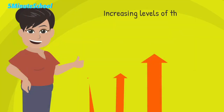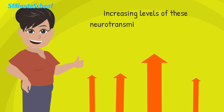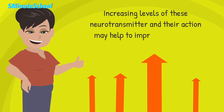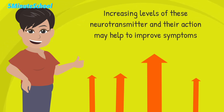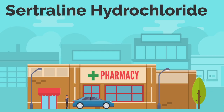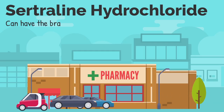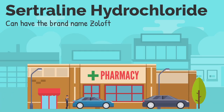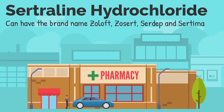Therefore, the principles of sertraline and antidepressants in general is that they increase the amounts of these neurotransmitters. Some of the trade names of sertraline hydrochloride include Zoloft, Zocert, Sirdep, and Sertimer.